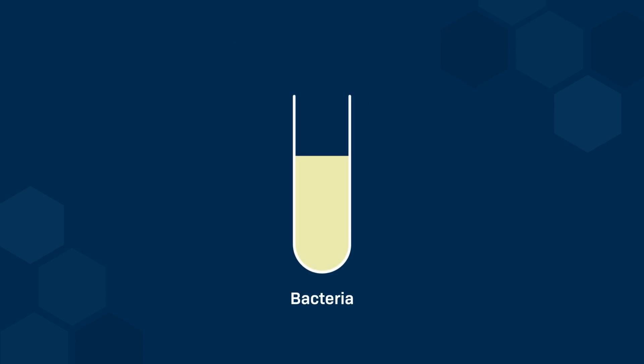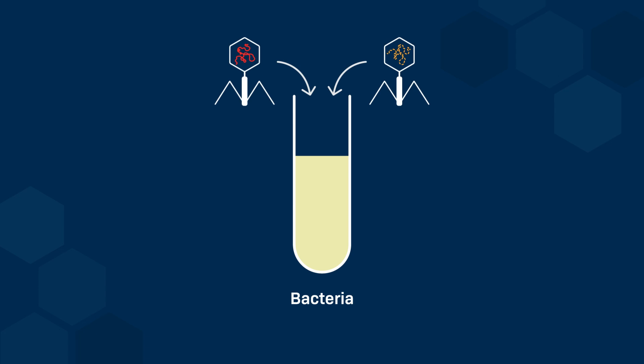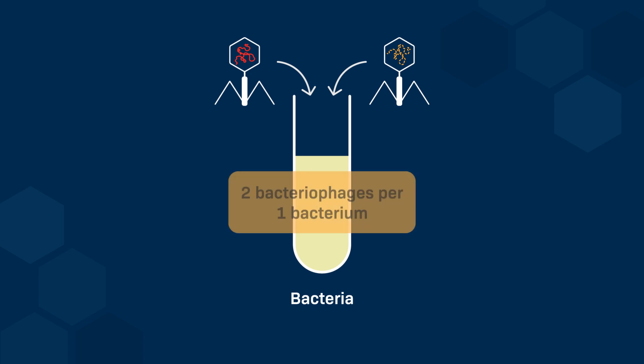A recombination assay is a two-step process. In the first step, the infection occurs in solution, where we have an excess of bacteriophages to infect a limited number of bacteria. The bacteria-to-bacteriophage ratio is chosen to be approximately two bacteriophages per bacterium. Therefore, recombination can happen between the two bacteriophage genomes inside a single bacterium.